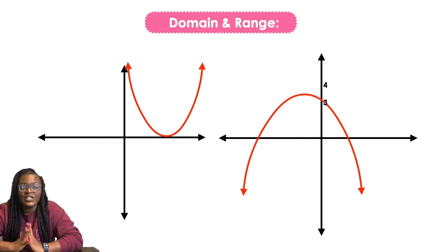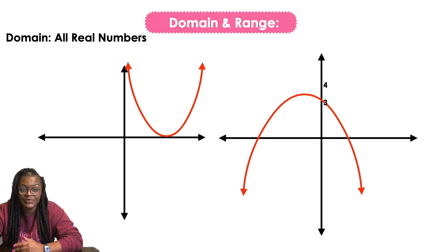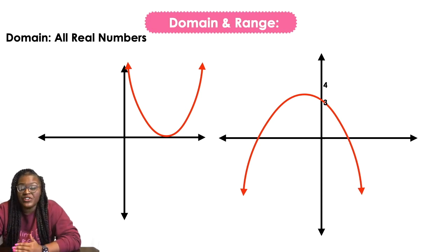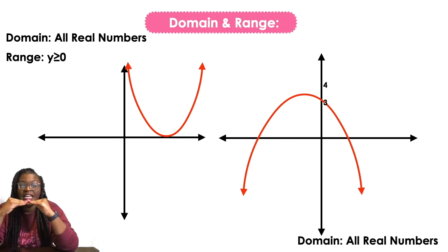When we're doing parabolas, you always want to pay attention to your domain and your range. The domain of a parabola is always going to be all real numbers, no matter what. And just for the sake of doing examples, if you were given this specific graph, you would say that the range is y is greater than or equal to zero, because the bottom of that parabola hits at zero.